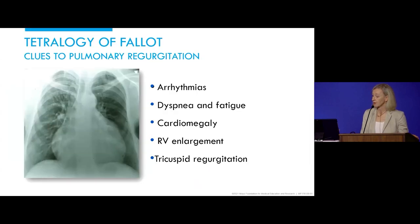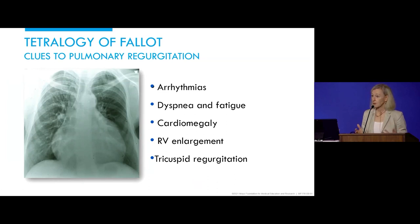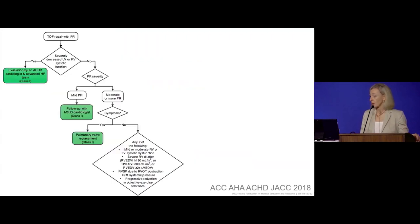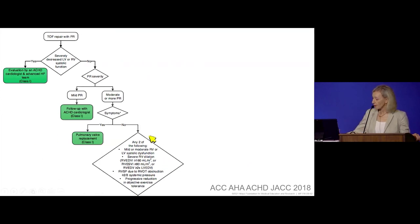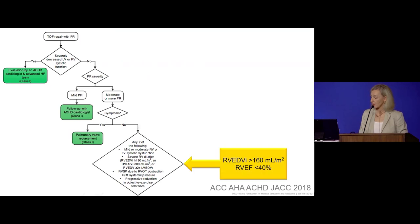Any patient with repaired tetralogy of Fallot who has cardiac enlargement, arrhythmias, symptoms, cardiomegaly, right ventricular enlargement, or tricuspid regurgitation — always look at the pulmonary valve. Really, any patient with repaired tetralogy of Fallot. Looking at the guidelines, this is a patient we would recommend for intervention; she clearly meets criteria. Although there's a lot of discussion about optimal timing of intervention, everybody would agree this patient qualifies.